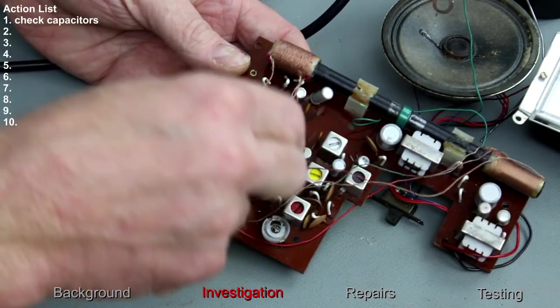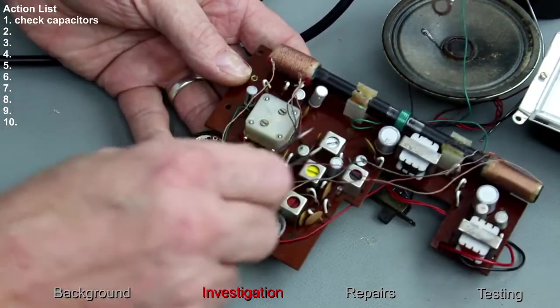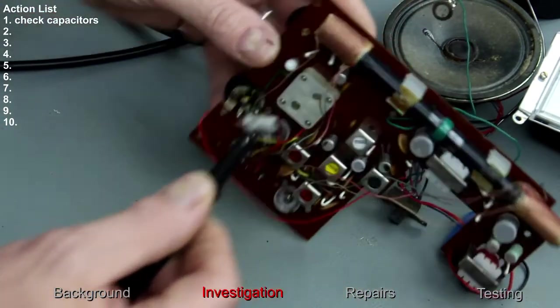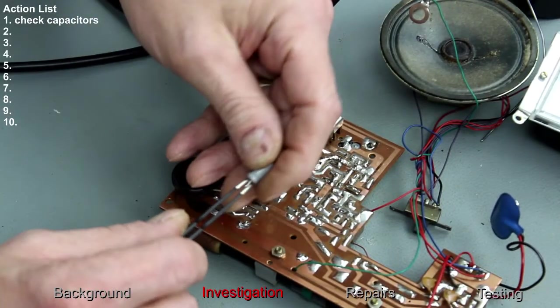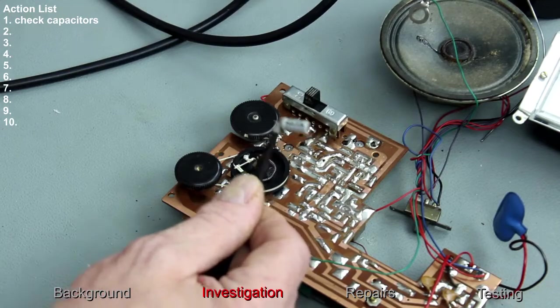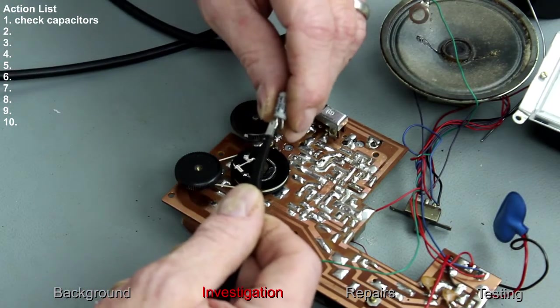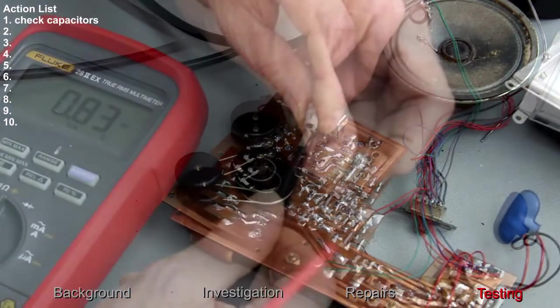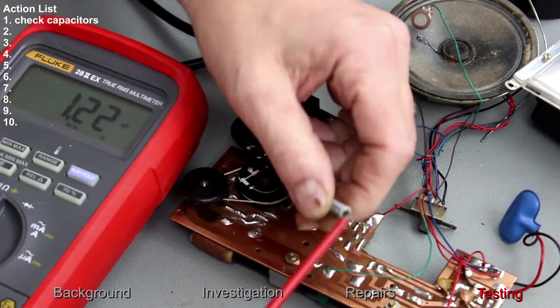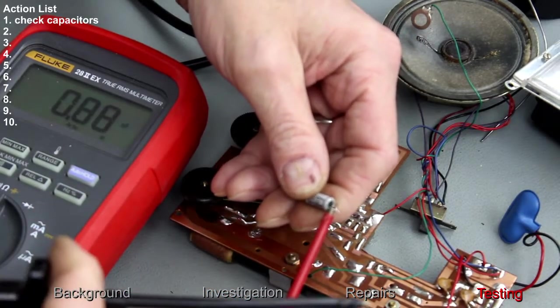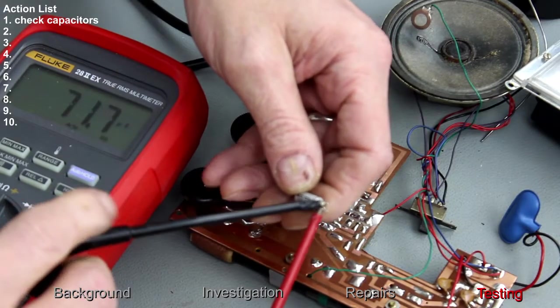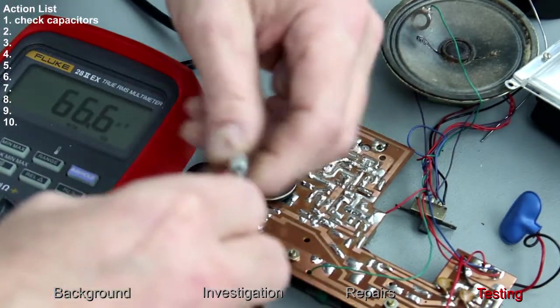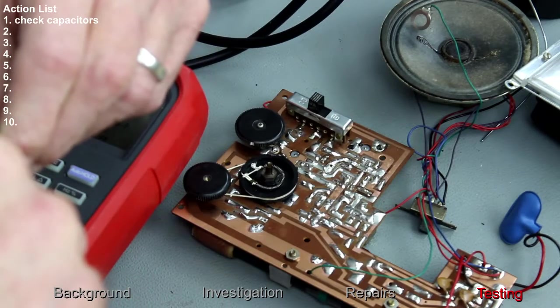Positive is up towards the aerial. The value of this one is supposedly 30 microfarad. It should be 30 microfarads. We've got 66 microfarads so I'm going to replace that one straight up.